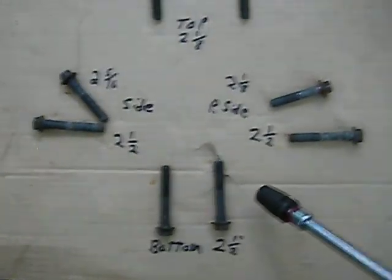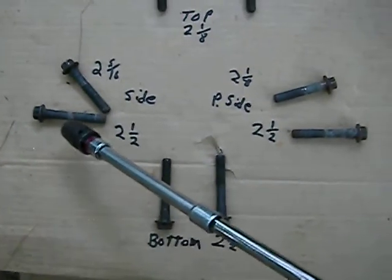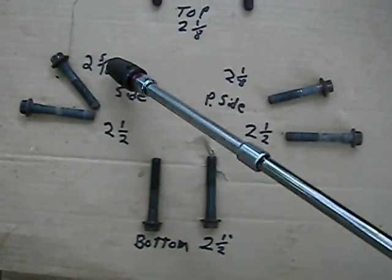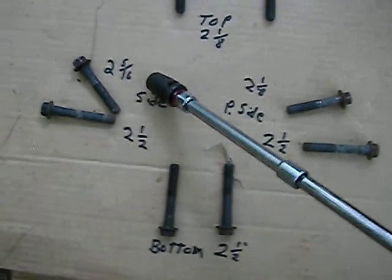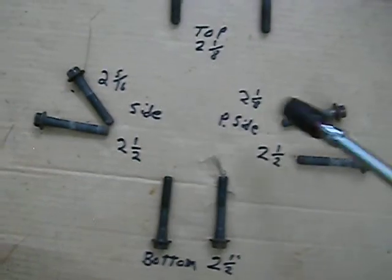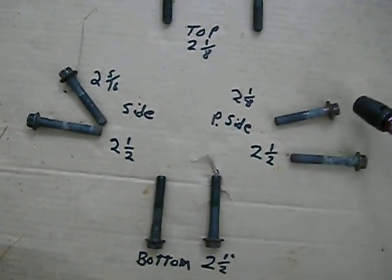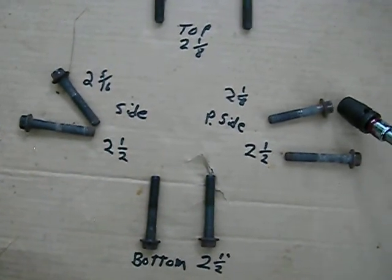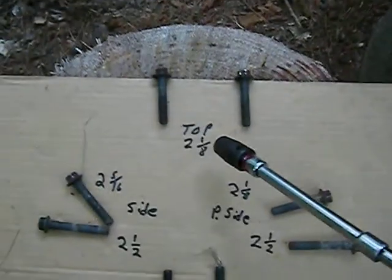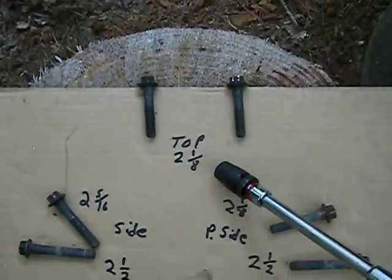The bottom four are about two and a half inches. The top one on the left side is two and five-sixteenths inches. And the top one on the passenger side is two and one-eighths. The top are two and one-eighths.